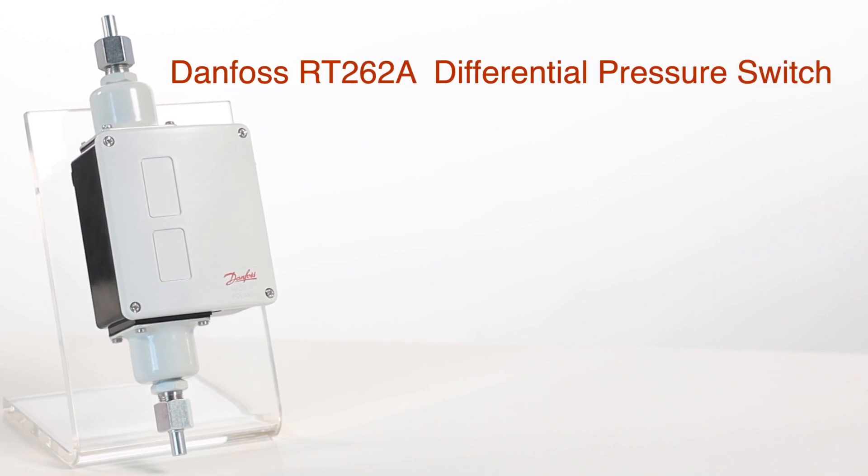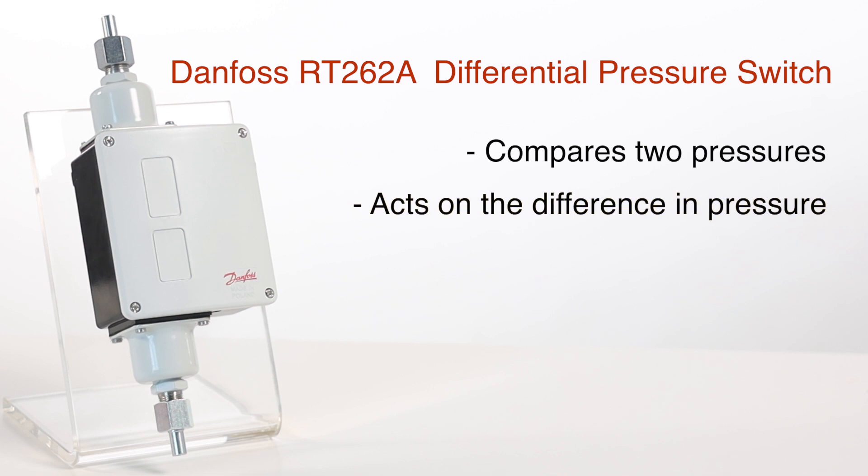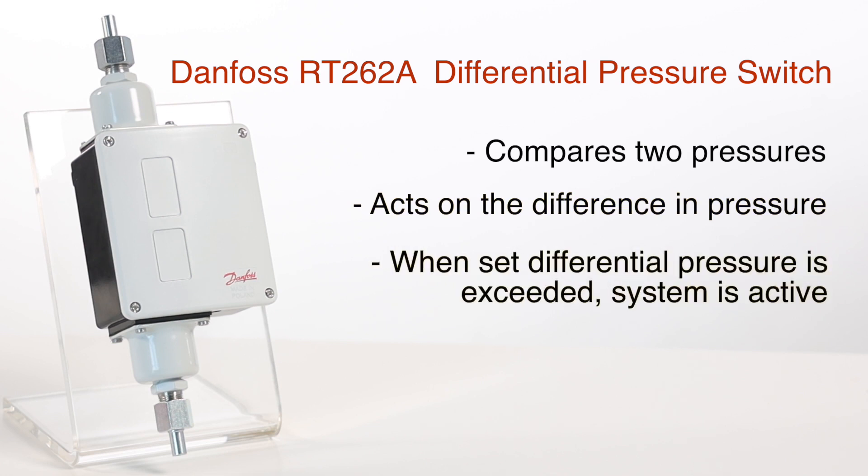A differential pressure switch compares two pressures and acts on the difference in pressure. When the set differential pressure is exceeded, the contact system is active.